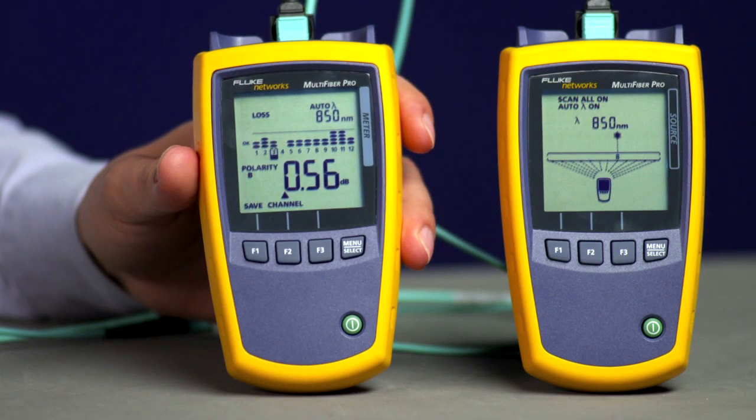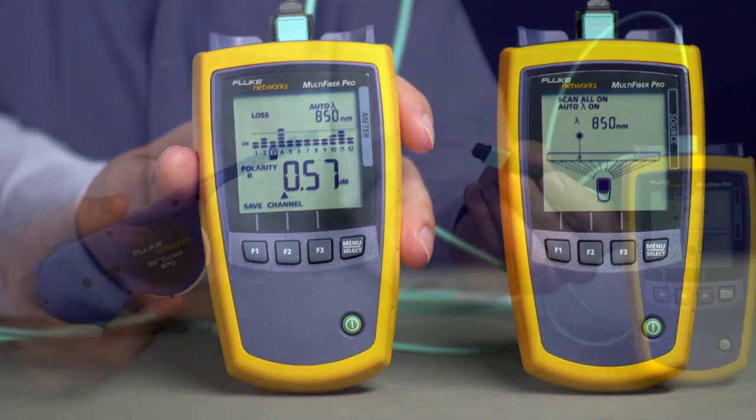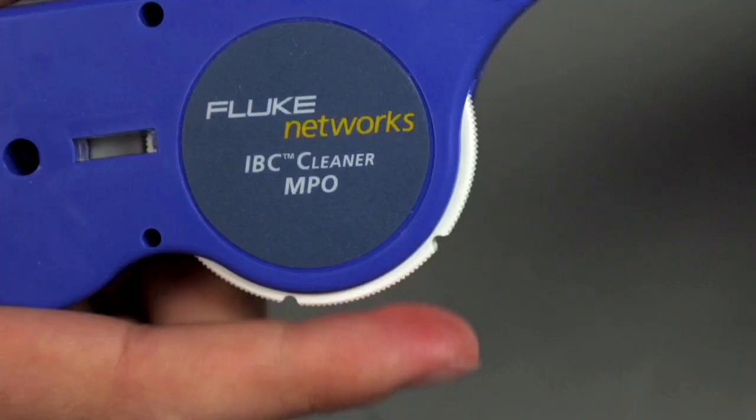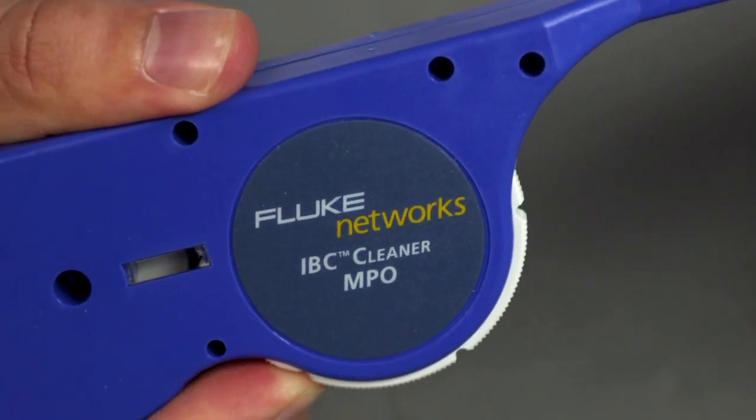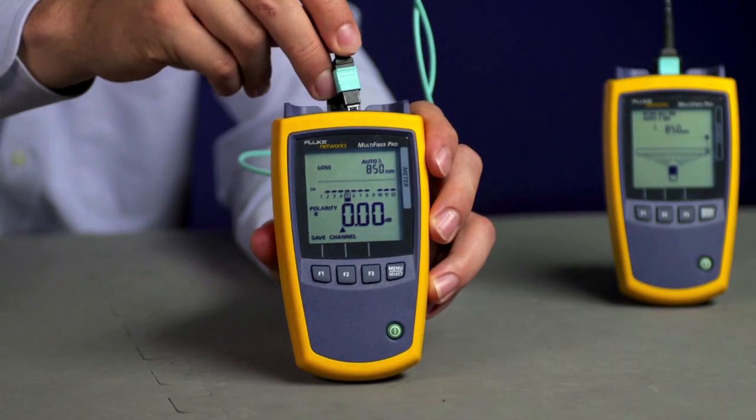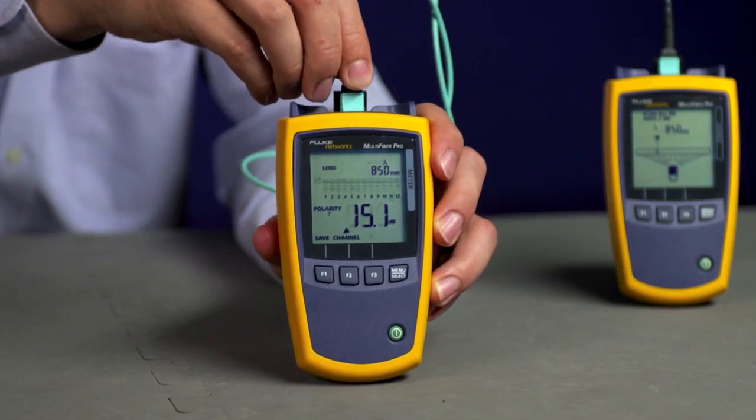The Multi-Fiber Pro brings simplicity back for multi-fiber cable testing in any environment. Begin a test by setting the reference. As usual, clean the end-face connectors with our one-click MPO cleaners. Then simply connect one of the given test cords to the power meter and the light source.